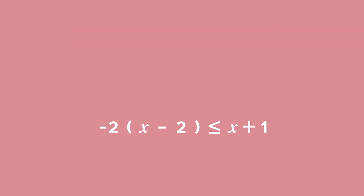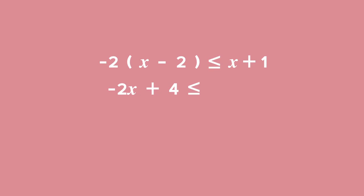To simplify this inequality, we use a similar method as we would in equations. First, get rid of the brackets by multiplying the minus 2 into the brackets, so we get minus 2 times x is minus 2x. Minus 2 times minus 2 is positive 4. That is less than or equal to x plus 1.